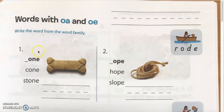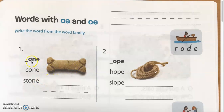Let's take a look. We are going to write words from the word family. Number one, the word family is OWN. We have K-OWN, cone; ST-OWN, stone; and the picture is bone — B-OWN, bone. Let's go ahead and write B-OWN: O-N-E, own.